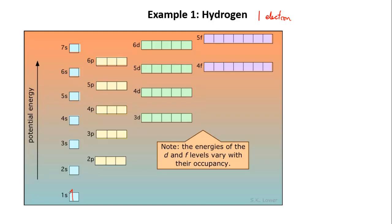We don't always want to draw a full diagram to represent the electrons. So to write the electron configuration in shorthand we write 1s¹. The first one, the big one, indicates the energy level. The s indicates the kind of orbital and the little one tells you that there is one electron in that orbital.